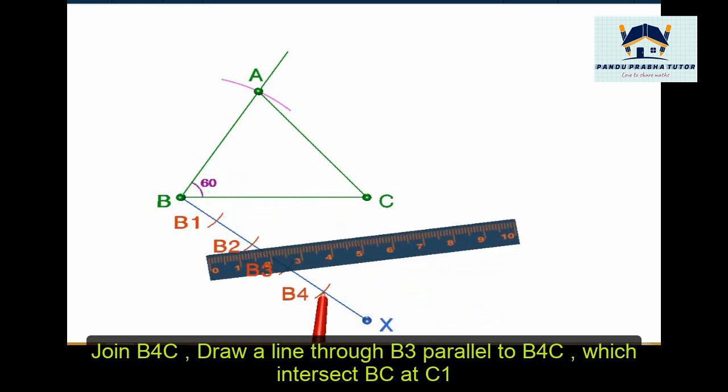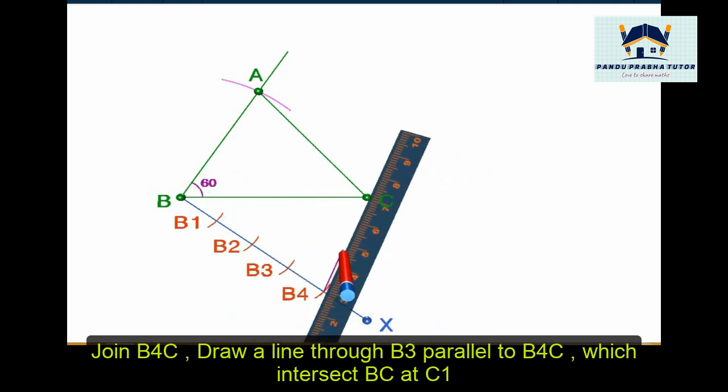Now join B4 point to C. Now we have to draw a parallel line from point B3 which is parallel to B4C. Follow this step.